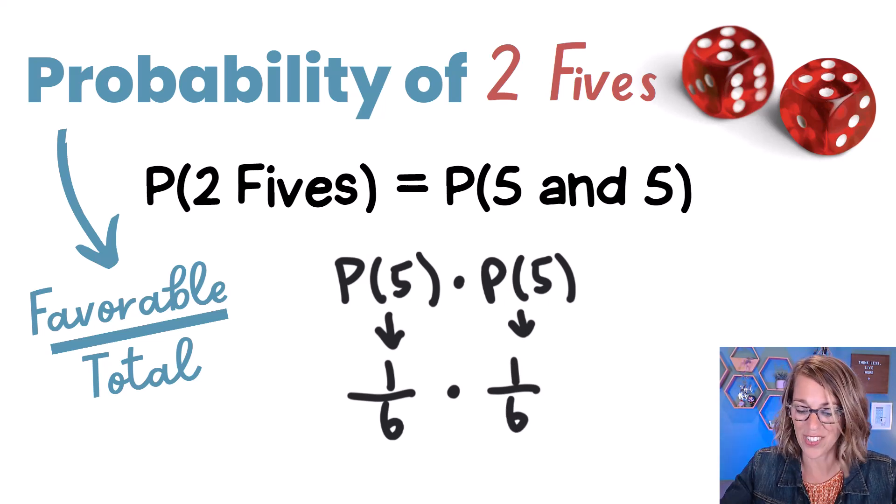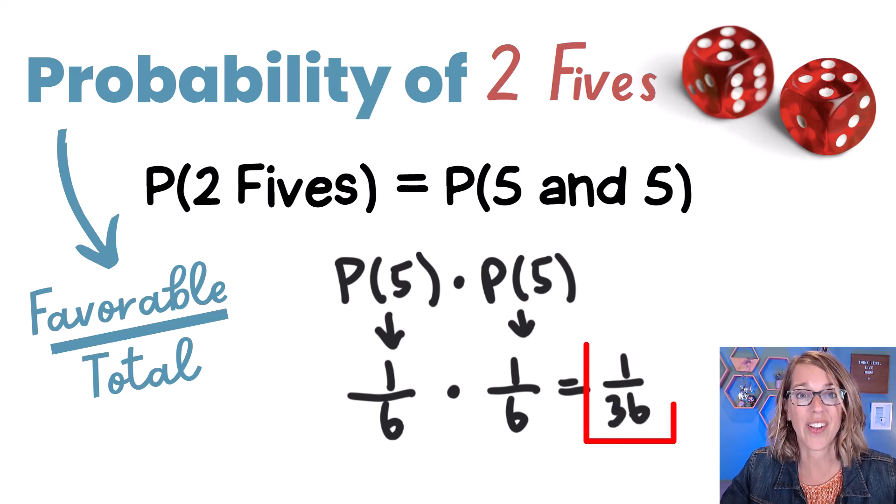I can multiply this guy straight across and I end up with one over 36 as our probability.